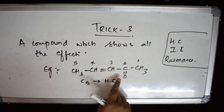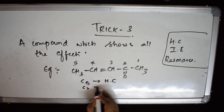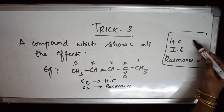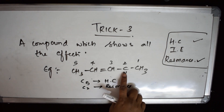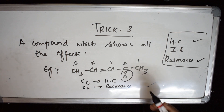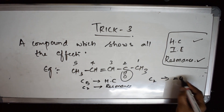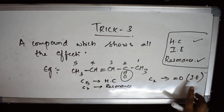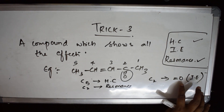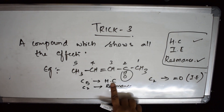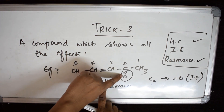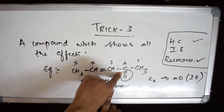Next, think about resonance. There is a double bond here, so C2 carbon is going to show resonance. Next, coming to inductive effect — C2 carbon also has a C=O double bond with oxygen, so this is where it will show inductive effect. Inductive effect is the polarization of the sigma bond due to an electron withdrawing or electron releasing group.